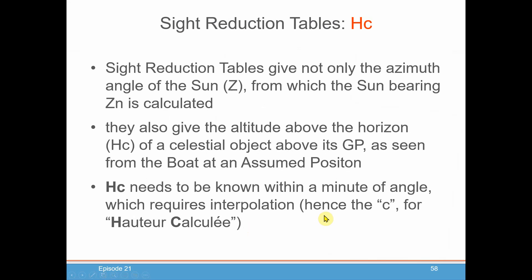Sight Reduction Tables, as we saw in our last episode, gives not only the azimuth angle of the Sun, from which you can calculate the Sun's bearing Zn, but it also gives you the altitude above the horizon, HC, of a celestial object above its geographic position, as seen from the boat at an assumed position. HC needs to be known within a minute of angle, which requires interpolation. But today, we're not going to be doing that. Today, we're going to just take whole degrees of angle for declination.